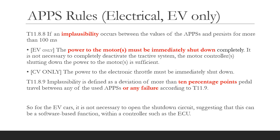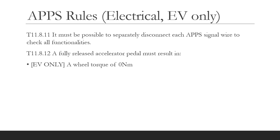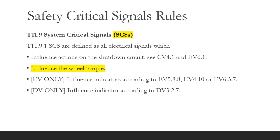The rules tell us what to do if there is an implausibility between the values of the APPS: the power and the motors must be shut down completely, but it is not necessary to open the shutdown circuit. This suggests it can be carried out as a software-based function within a controller such as the ECU. Implausibility is defined as more than 10 percentage points difference between APPS values. Further rules describe how to physically arrange the wiring for testing, and what should happen when the accelerator pedal is released — we should have zero wheel torque.